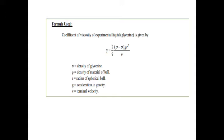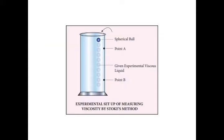g is acceleration due to gravity, and v is the terminal velocity. The experimental setup of measuring viscosity by Stokes method is shown in the diagram.